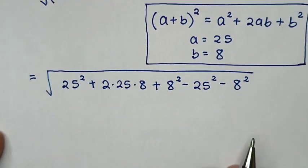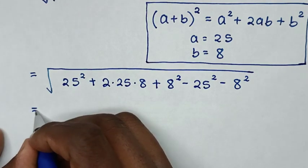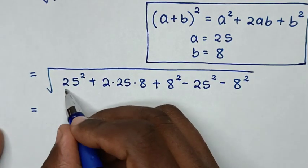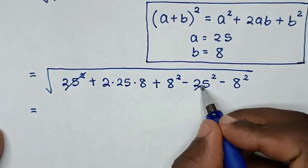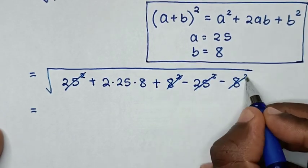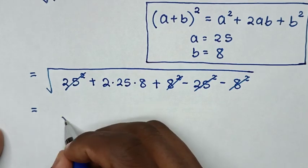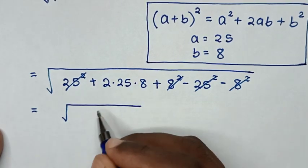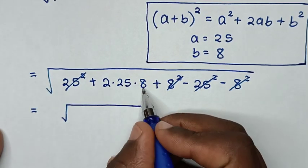So, the next step, it will be equal to this 25 square minus 25 square, so it will cancel. 8 square minus 8 square also it will cancel, so it will be square root of 2 times 25 times 8.